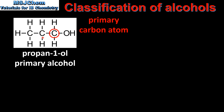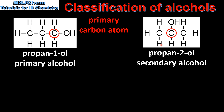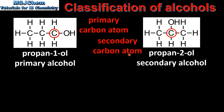Our next example is propan-2-ol which is a secondary alcohol. Propan-2-ol is classified as a secondary alcohol because it has a secondary carbon atom. The secondary carbon atom is the carbon atom that's bonded to the functional group and it's also bonded to two other carbon atoms.